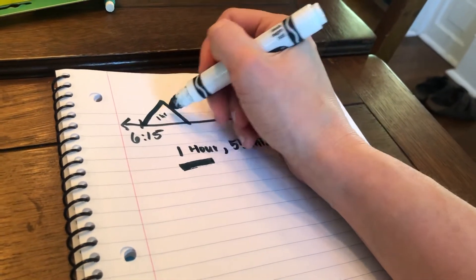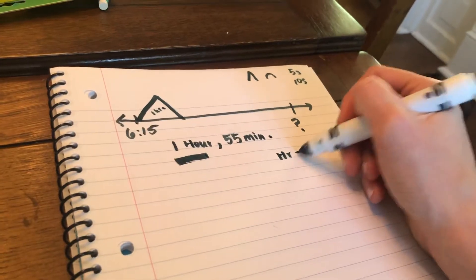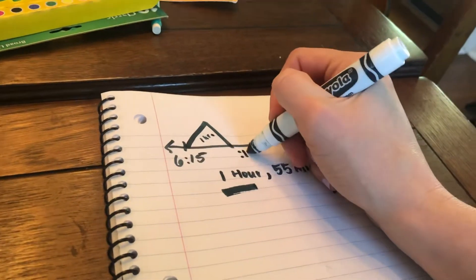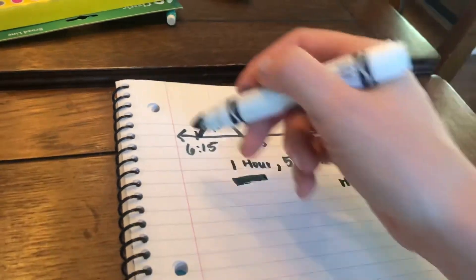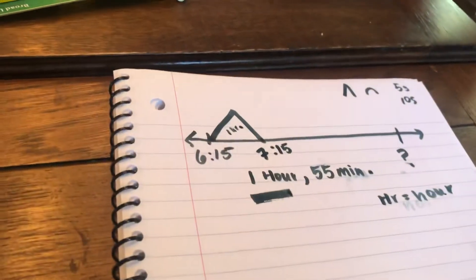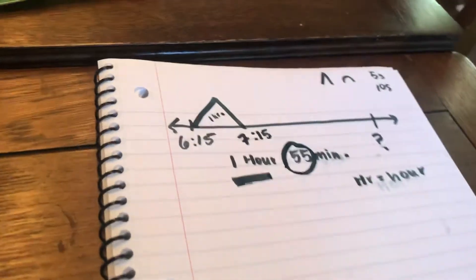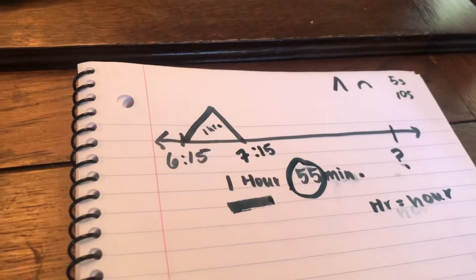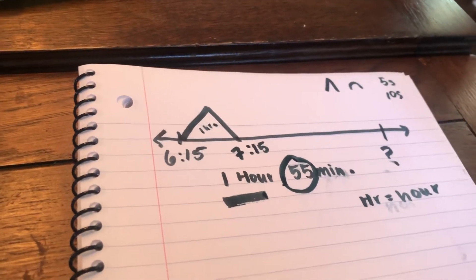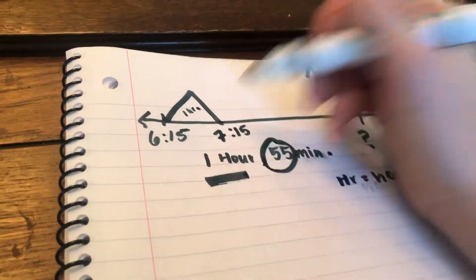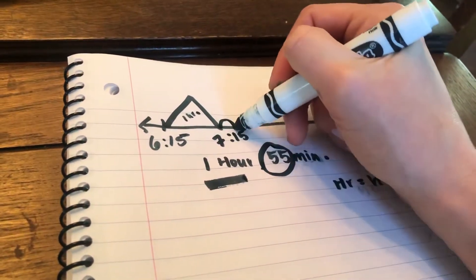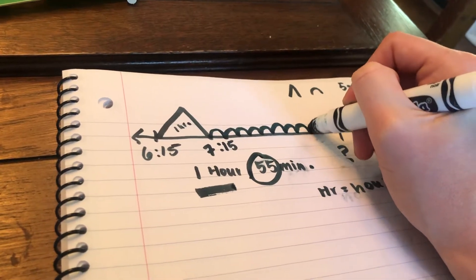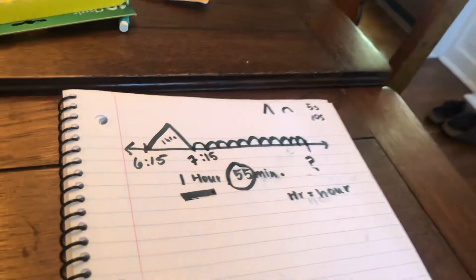I know the hockey game lasted one hour and 55 minutes. I always want to start with my biggest jump — my mountain. So if I jump one hour from 6:15, my 15 stays the same because I didn't move minutes and I jump one single hour: 7:15. Now I need to count 55 minutes. I'm going to do my hills in five minutes: 5, 10, 15, 20, 25, 30, 35, 40, 45, 50, 55 minutes.